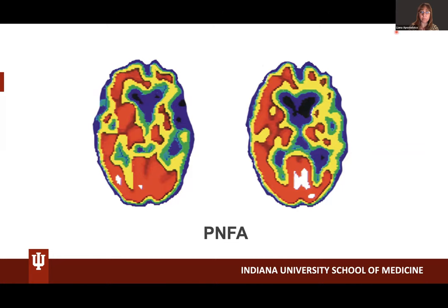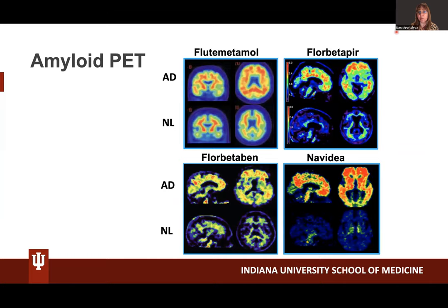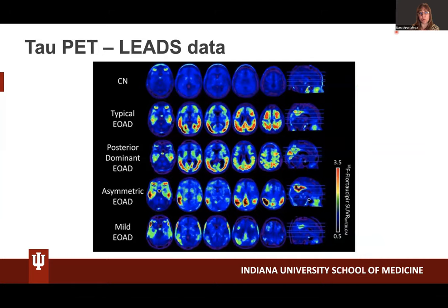This is LEADS data from the longitudinal early onset AD study that Gil Rabinovich and Leo Yaccarino have provided. Among those early onset cases, we see a pattern of typical early onset Alzheimer's with tau binding in the posterior cortical regions, pretty symmetric, some in the front as well — a posterior dominant EOAD variant, most likely a PCA — then an asymmetric early onset AD, most likely logopenic, and some cases with very mild tau binding.